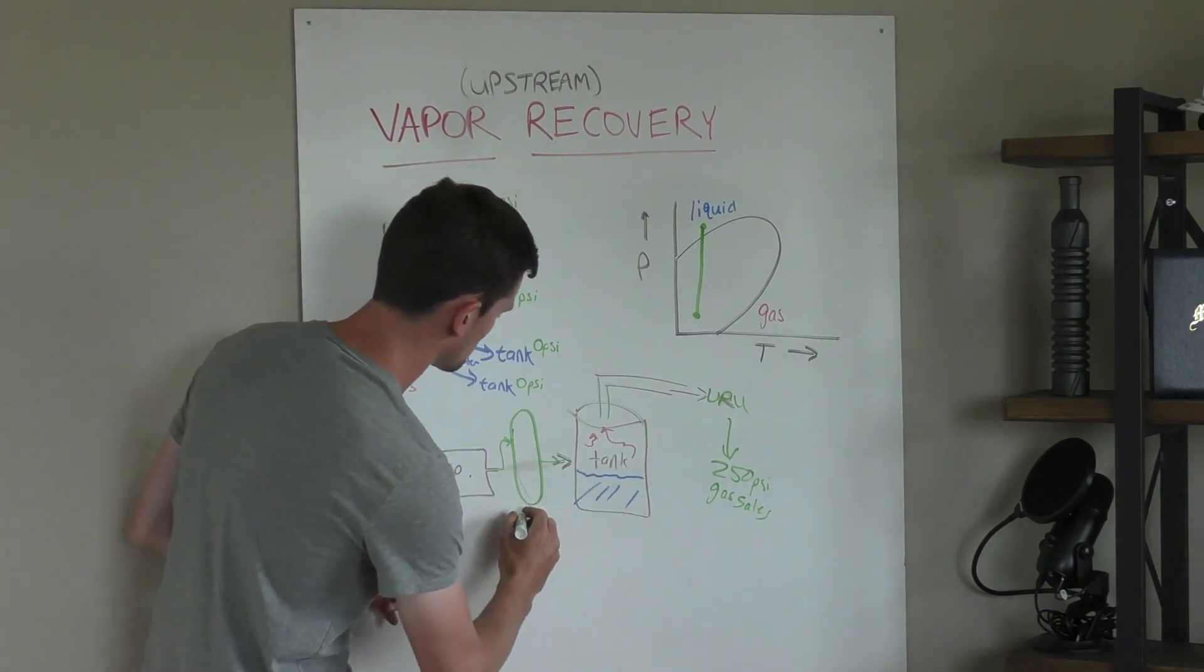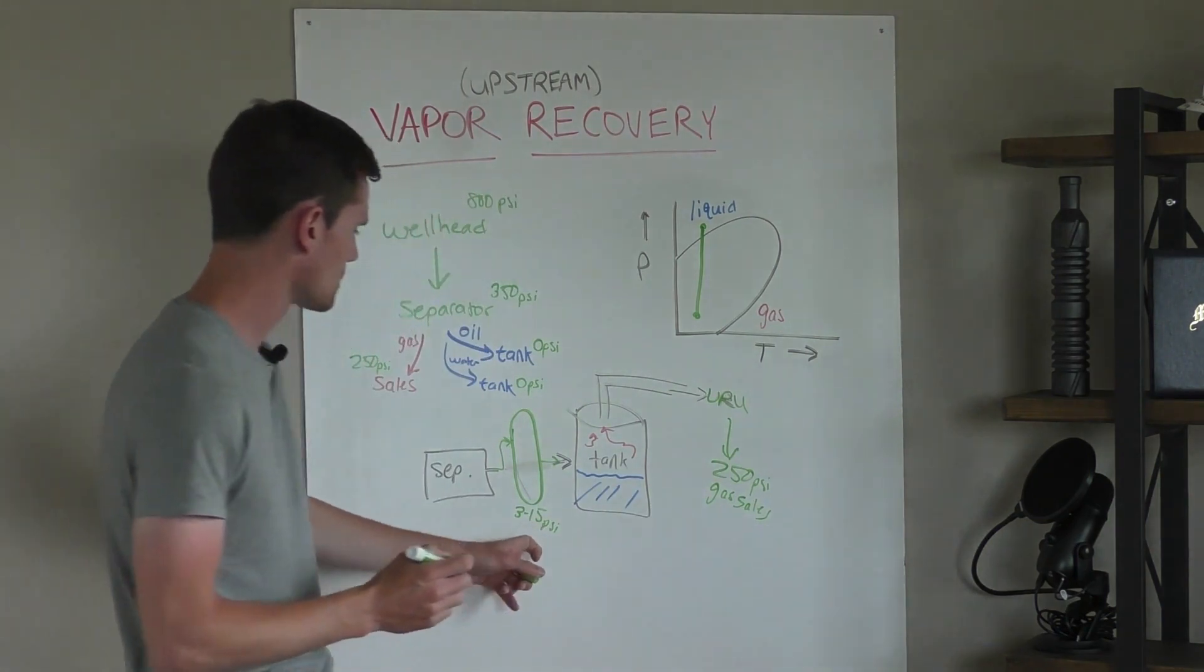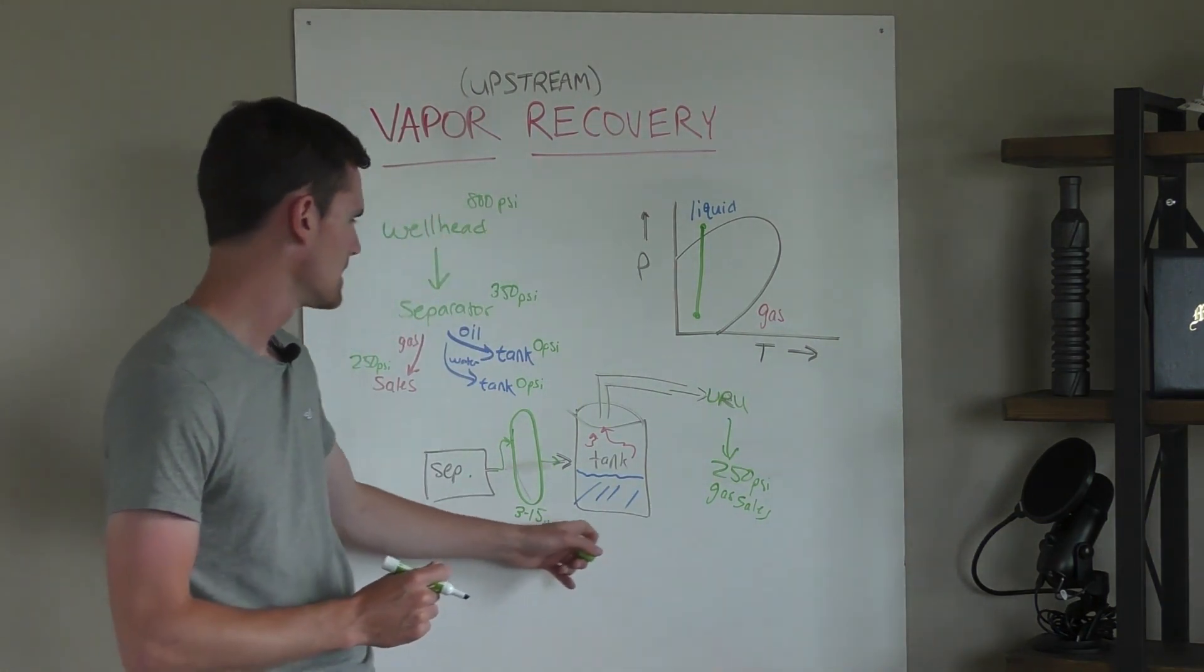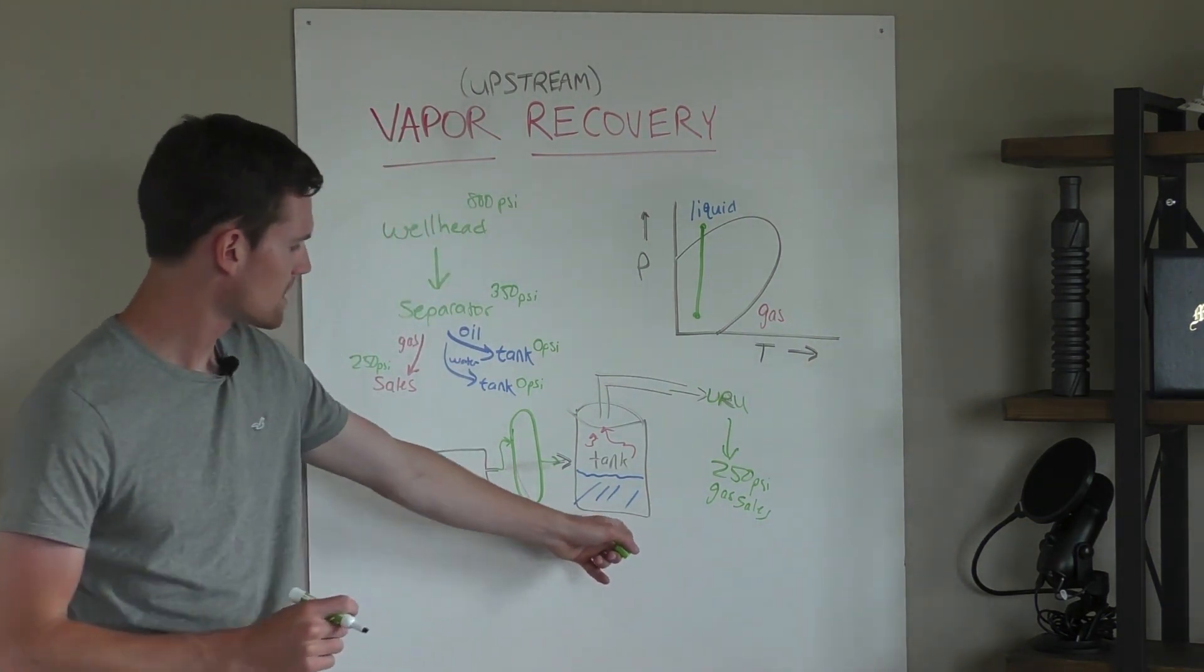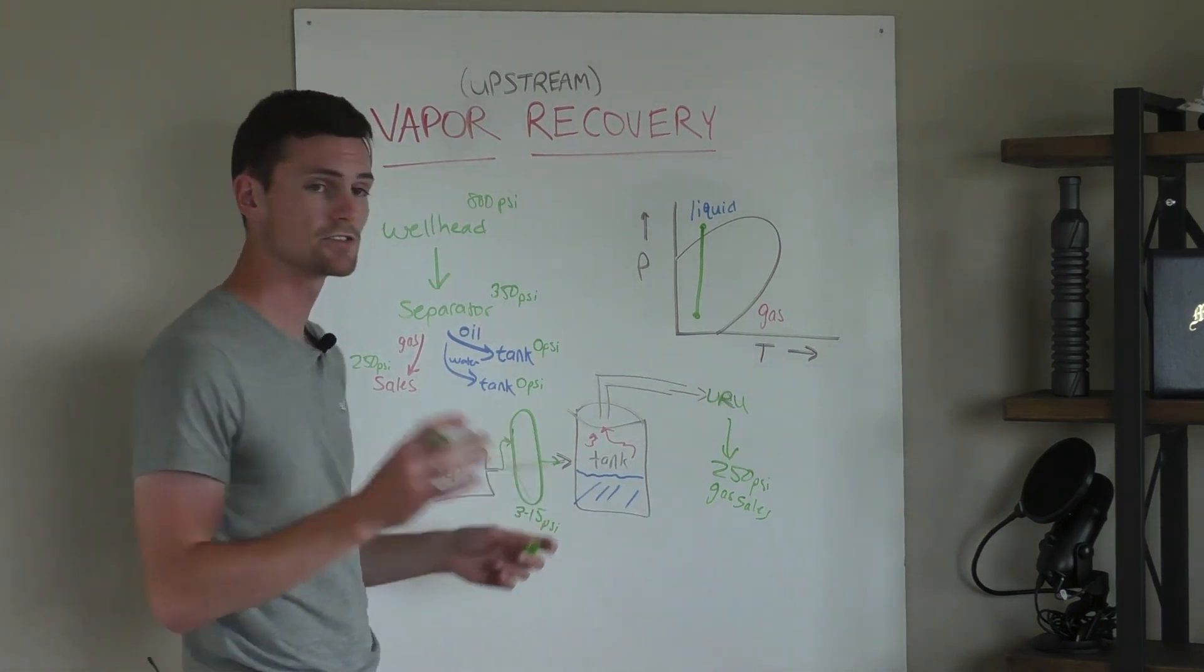And this is typically going to be held at, let's say, three to fifteen psi. So it's a whole lot lower than your separator pressure, not quite to the tank pressure. So you're going to get most of your flash gas is going to come out in this. And this is a vessel that can take pressure.